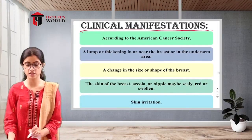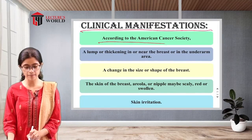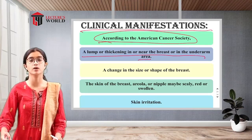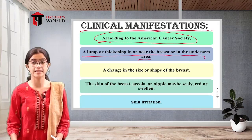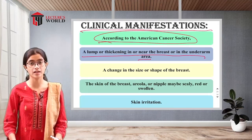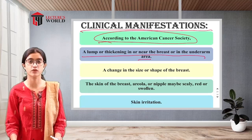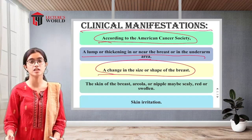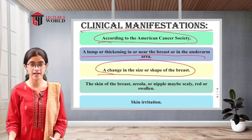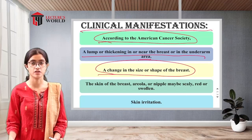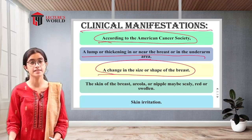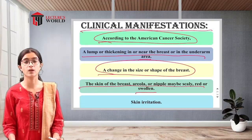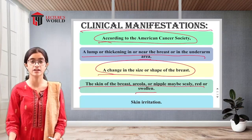The clinical manifestations of breast cancer, according to the American Cancer Society, include: a lump or thickening in or near the breast or underarm area; a change in the size or shape of the breast; and skin of the breast, areola, or nipple that may be scaly, red, or swollen. Patients may also complain of skin irritation.